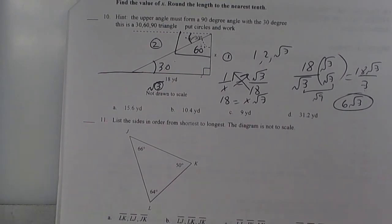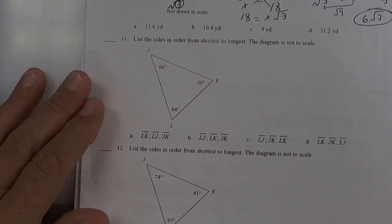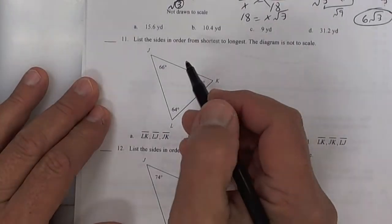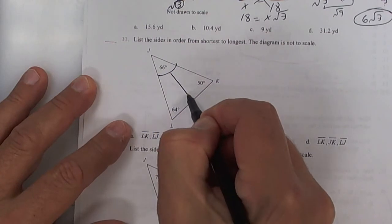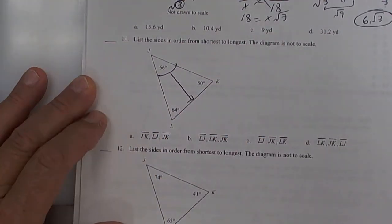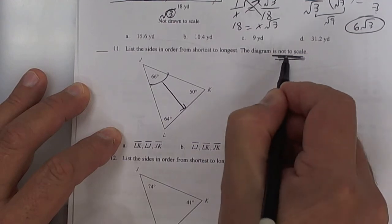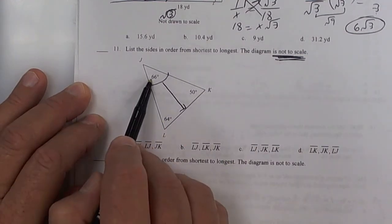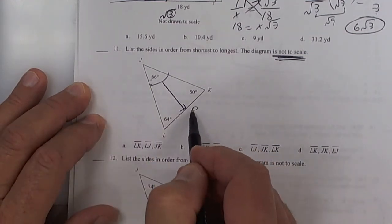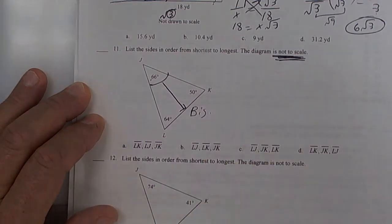Again, sorry I'm going so fast. We're looking for the longest side. Well, this is the biggest angle. So the longest side has to be that one. You can't go by the drawing. It says right here not to scale. So you can't go by that. 66 is the biggest angle. So this is the biggest side. Is everybody clear on that?